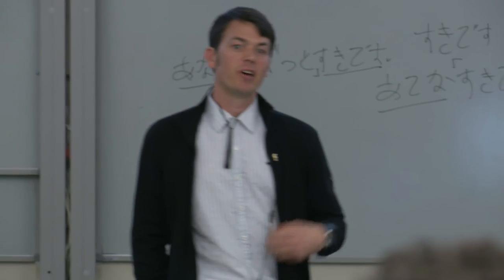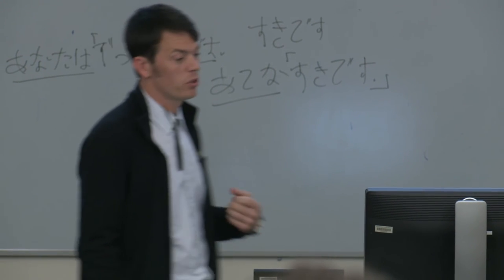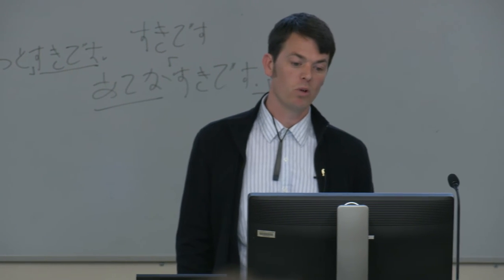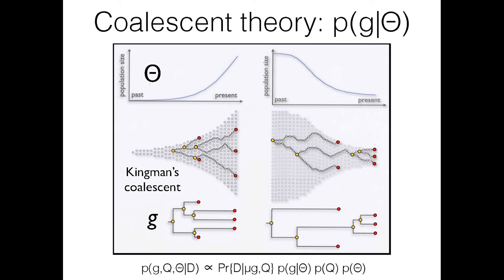Beyond the simple question of how organisms relate ancestrally and when their common ancestors existed, we can look at the shape of evolutionary relationships to understand underlying dynamics. Here's a genealogy of influenza across a number of seasons alongside the associated seasonal peaks in pulmonary disease. We have good mathematical models describing the non-linear dynamics and good statistical models describing the population genetics — the question is how these two inform each other and whether we can integrate information from both sources into a single coherent predictive model.